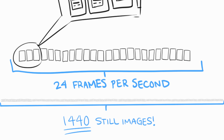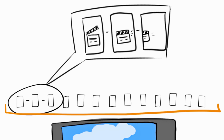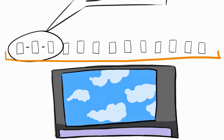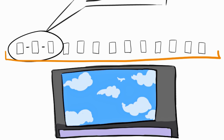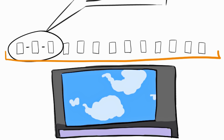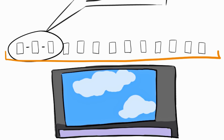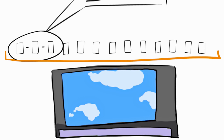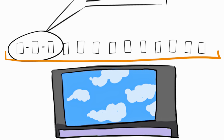When we shoot a time-lapse, we simply reduce the number of photos we take per second, put them together in an editing program, and then play them back at 24 frames a second. Because the interval between each frame is longer, the end result looks like the subject is moving at a much faster speed.